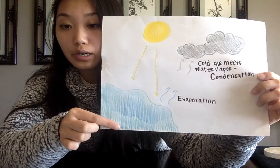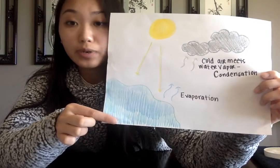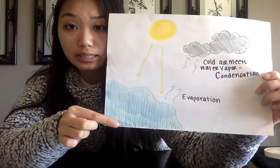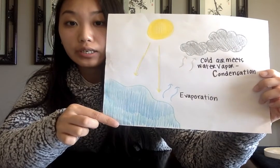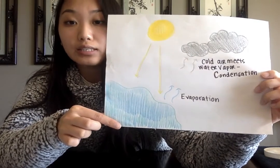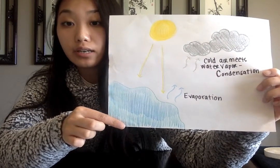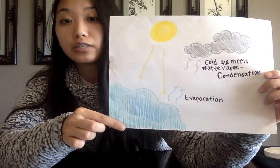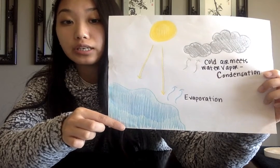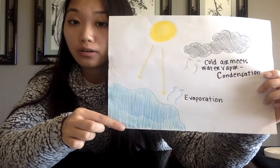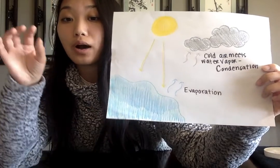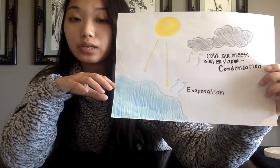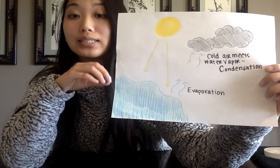Water vapor is an invisible gas that we can't see, and the water vapor will travel up into the atmosphere. As it travels up into the atmosphere, it's going to get colder. And as it gets colder, it's going to turn back into a water droplet. The process of the water vapor turning back into a water droplet is going to be called condensation.